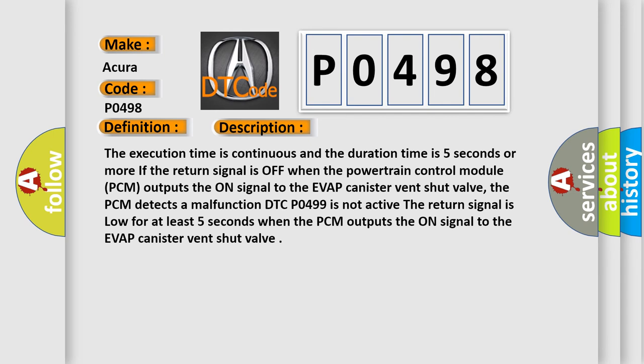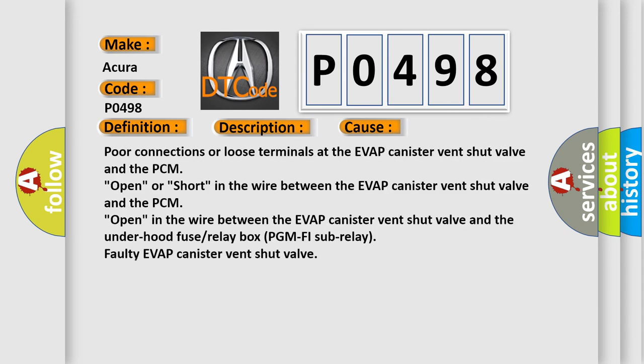This diagnostic error occurs most often in these cases: poor connections or loose terminals at the EVAP canister vent shut valve and the PCM, open or short in the wire between the EVAP canister vent shut valve and the PCM, open in the wire between the EVAP canister vent shut valve and the under hood fuse relay box PGM-FI sub-relay, faulty EVAP canister vent shut valve.